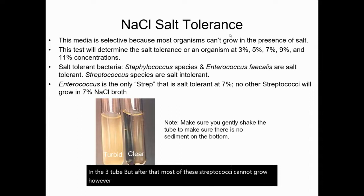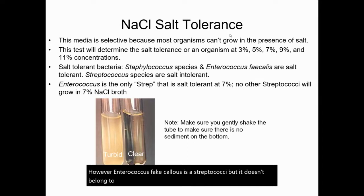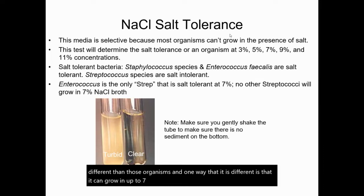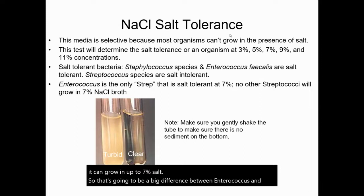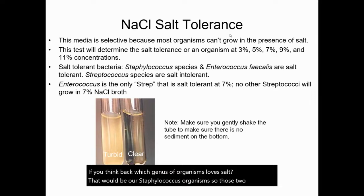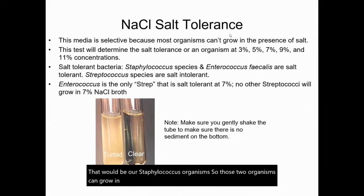However, Enterococcus faecalis is a streptococcus, but it doesn't belong to the genus Streptococcus because it's a little bit different from those organisms. One way it is different is that it can grow in up to 7% salt — that's a big difference between Enterococcus and Streptococcus species. If you think back, which genus of organisms loves salt? That would be our Staphylococcus organisms, and those can grow in all concentrations of salt for this lab.